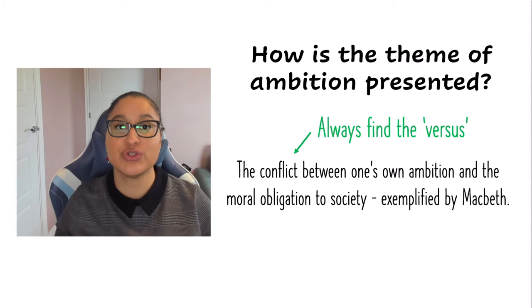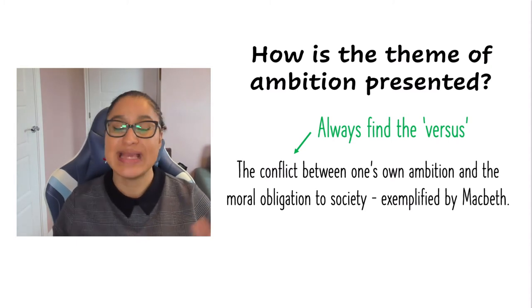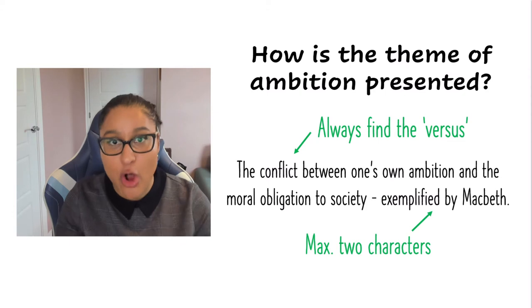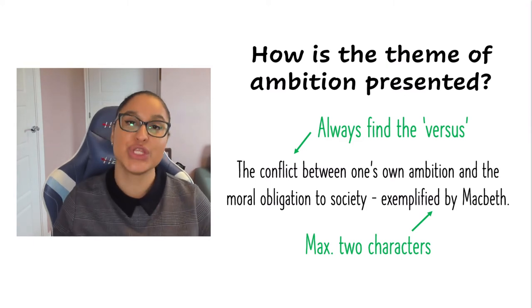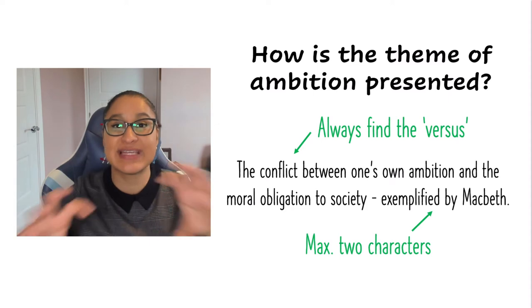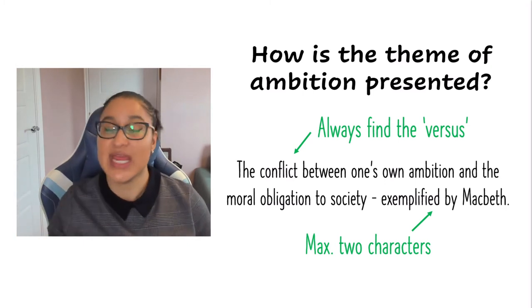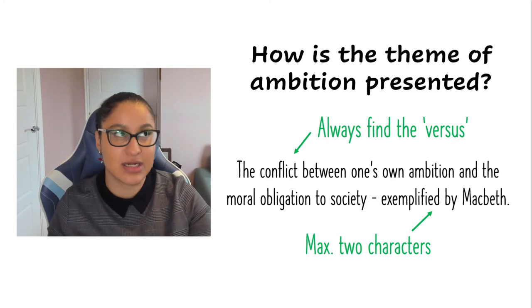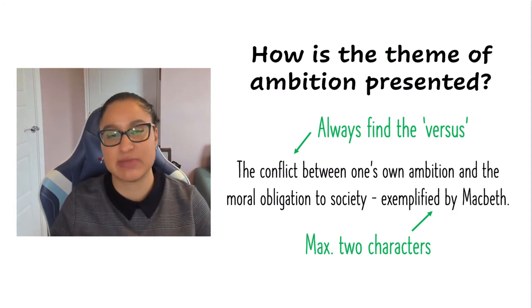You're going to have done your revision, thought about all the different themes, and for each theme, what is the conflict you would talk about? The other thing you want to do to help narrow your essay's focus is pick one — maximum two — characters to explore that conflict through. With ambition, I picked Macbeth; I could have also picked Lady Macbeth. On the other hand, sometimes the conflict in the theme is exemplified by the conflict between two characters — like for kingship versus tyranny: Macbeth is the tyranny, and King Duncan and Malcolm are the kingship.